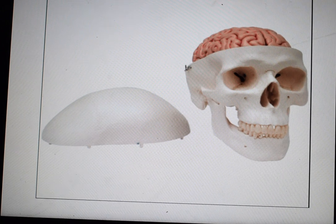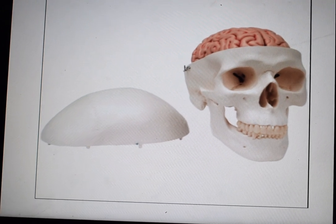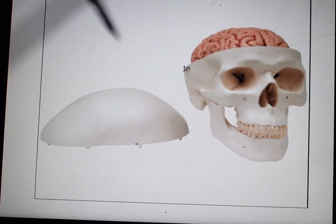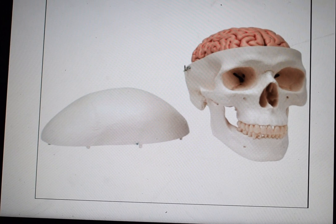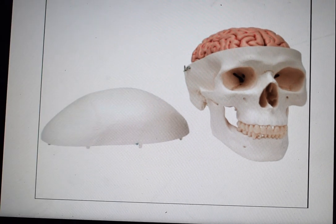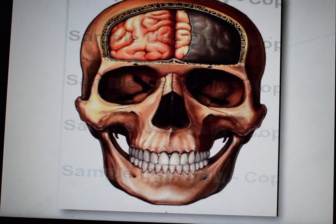Hi guys, welcome to the Plastic Surgeon Vlog. In this video we will see how we can read a CT scan at home. In the CT scan we will see the skull bone and the brain, and what are the abnormalities inside the brain. So first, let's see how the brain looks in a CT scan.